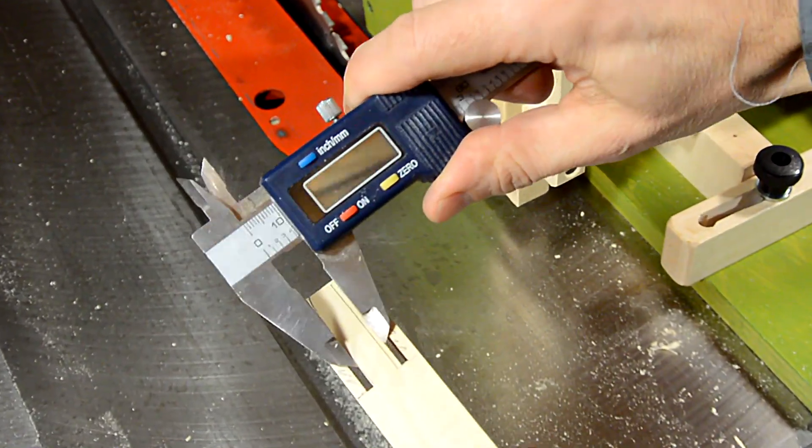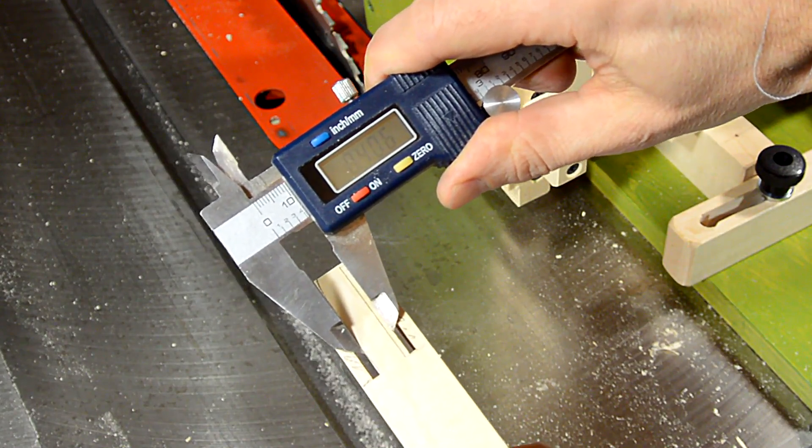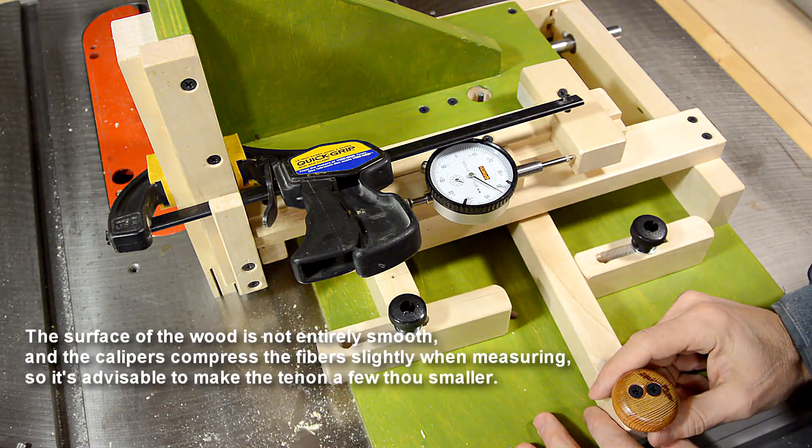Let's see, I've got 406 thou on the tenon thickness, so that's gonna be a bit tight. I really want to leave a little bit of slack for the tenon here.